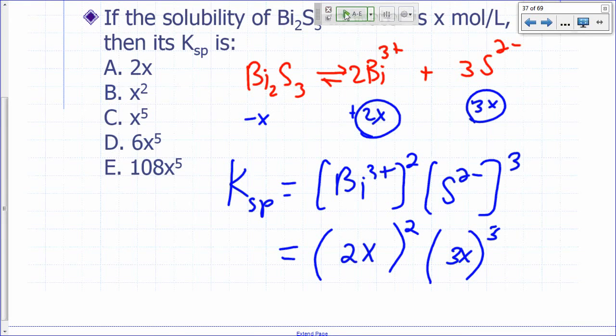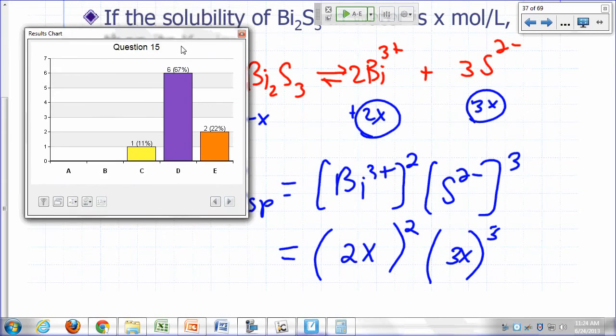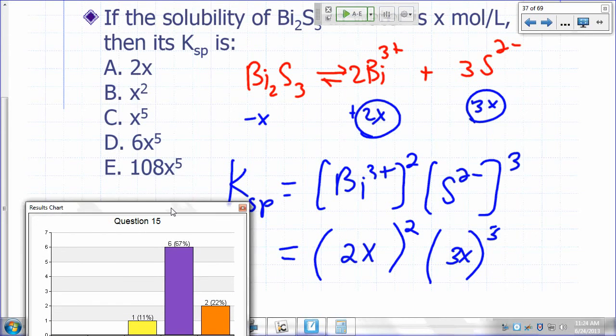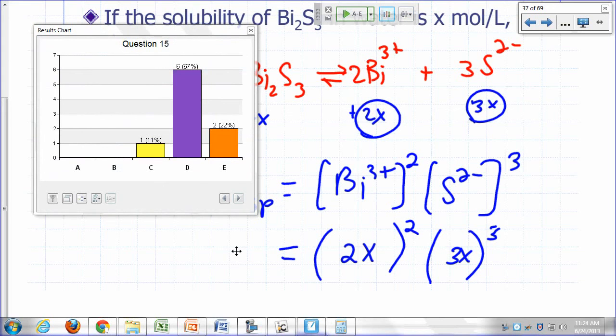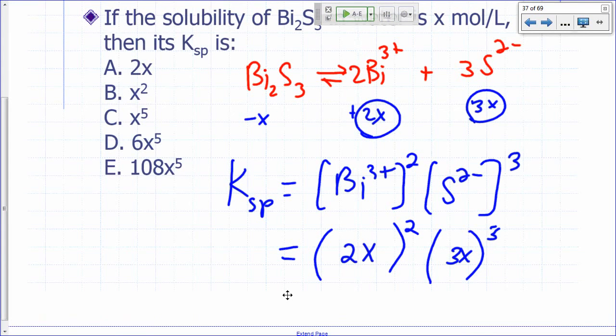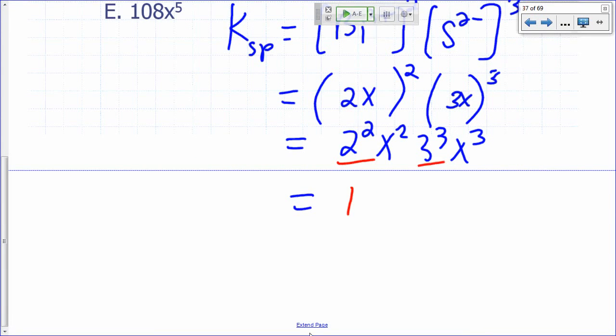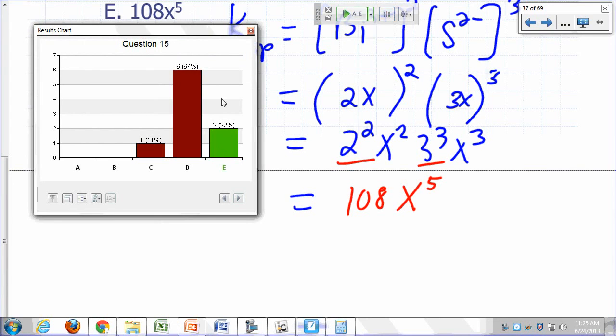You want a second chance? D is a popular answer. One more time. Who picked a different answer? Yes, what answer did you pick? E. Why did you pick E? 2 squared is 4 and 3 cubed is 27. The whole thing is inside the parenthesis, right? So this is going to be (2²)(x²)(3³)(x³). So that's equal to, this is 4 times 27, that's 108x⁵. The correct answer is E.